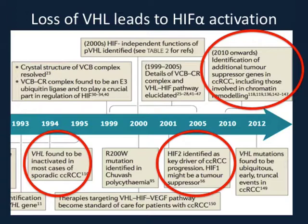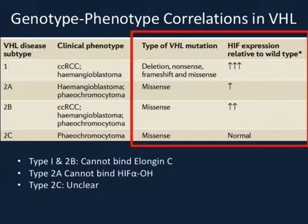Following the TCGA's detailed description of the genetics of clear cell RCC, we have much more understanding of what drives it. It seems that RCC is a metabolic disease and also a disease of abnormal DNA methylation, which results in abnormal gene expression driving the phenotype. The key line is that loss of VHL leads to HIF alpha activation and all the downstream effects of HIF alpha.